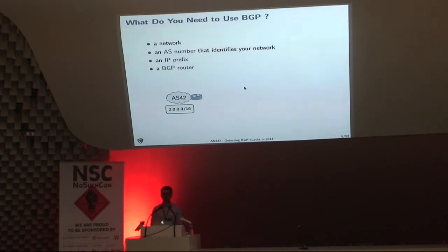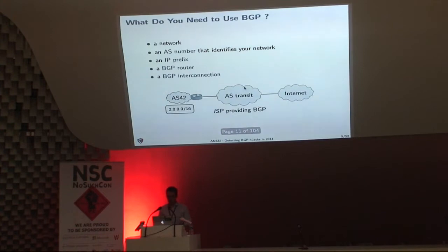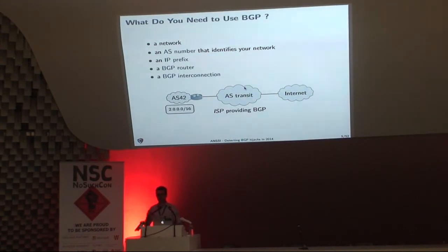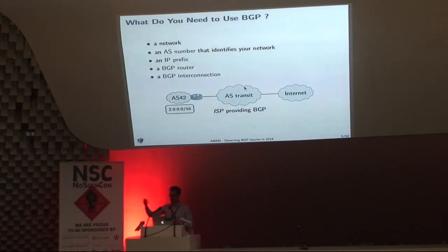Of course, you need a BGP router — it could be expensive networking equipment from companies like Cisco, or it could be a laptop with software such as OpenBGPD or BIRD. Finally, you need a BGP interconnection, which is a bit like the IP connectivity you get at home, except instead of using your set-top box you will use a BGP router. In this example, a small operator is asking for BGP connectivity from what we call an Autonomous System transit provider — essentially a big ISP — and because of this transit provider the AS is able to exchange packets over the internet.